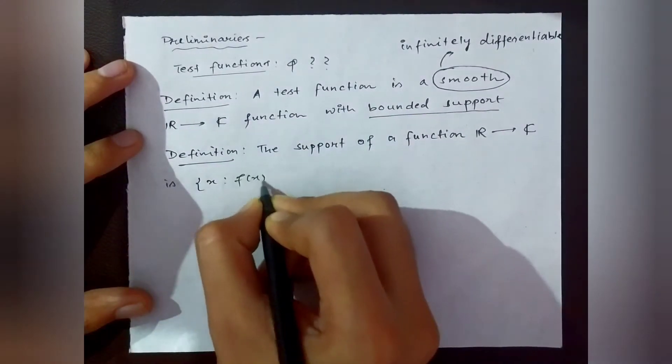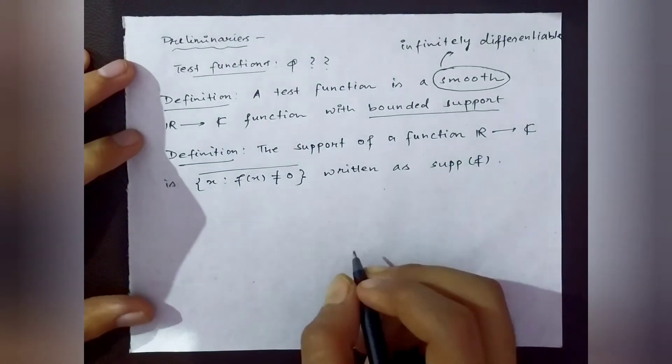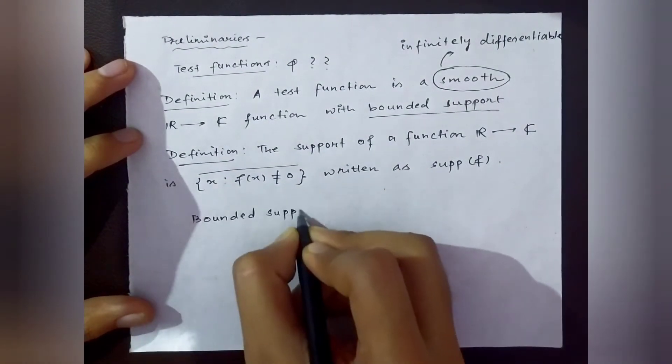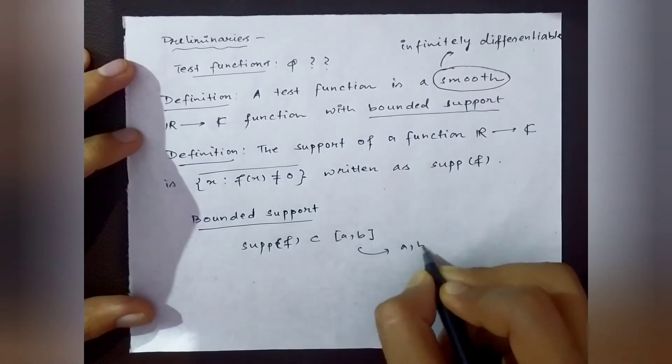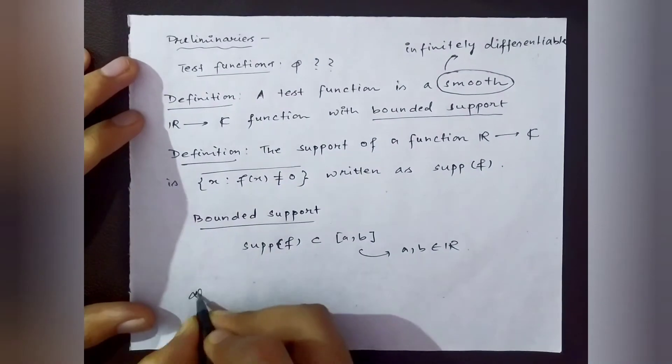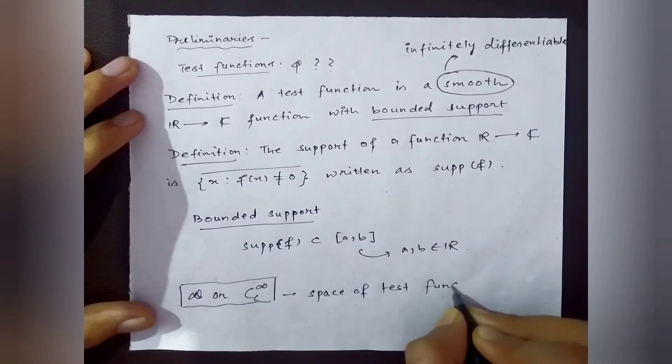A function with bounded support means there exists a finite interval such that the support of the function is a subset of that interval. In many standard textbooks, you'll find the notation D or C_c^∞, which represents the space of test functions.